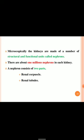Microscopically, the kidneys are made up of a number of structural and functional units called nephrons. The functional unit of the urinary system is the nephron. There are about 1 million nephrons in each kidney. A nephron majorly consists of two parts: the renal corpuscle and renal tubules.